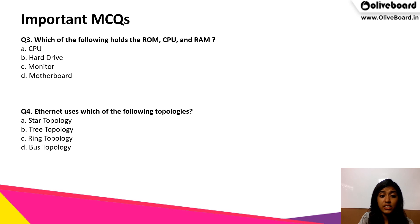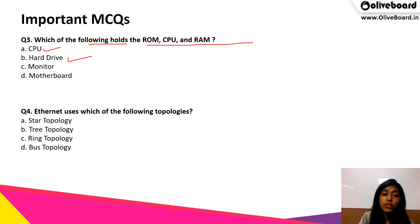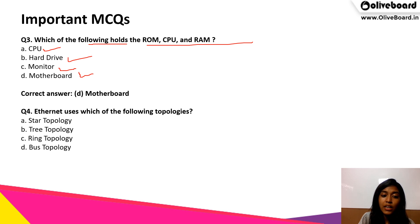The next question: which of the following holds the ROM, CPU, and RAM? The options are: first, CPU; second, hard drive; third, monitor; or fourth, motherboard. The correct answer is D — motherboard.